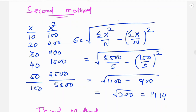The second method uses a direct formula: the square root of (summation x-squared divided by n) minus (summation x divided by n) whole squared.